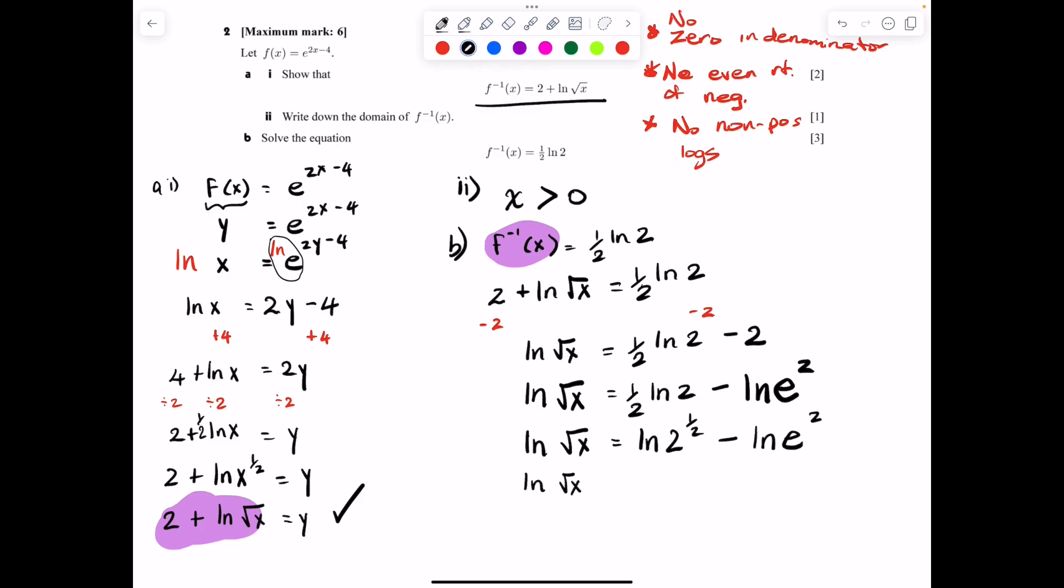All right. ln√x = ... Now I can condense those two things. And remember the law of logs, if you subtract, you can divide. So that means that becomes ln(2^(1/2)/e^2). All right.